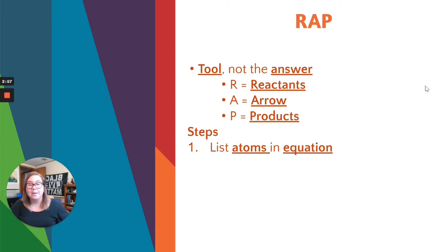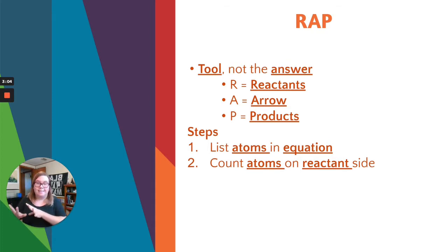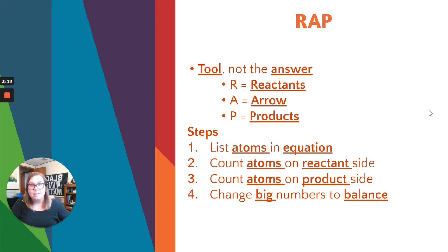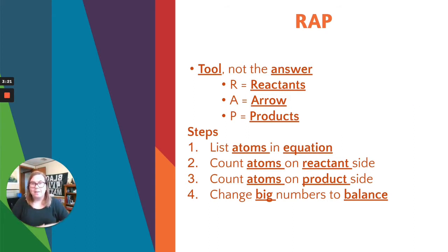And we have some steps to using this RAP formula. First, you're going to list the atoms that are in the equation. Second, you need to count the atoms on the reactant side. Third, you're going to count the atoms on the product side. And finally, you need to change the big numbers on the examples to balance. Get these steps down and make sure you have them recorded somewhere. Once we get to the examples, this will make a lot more sense.